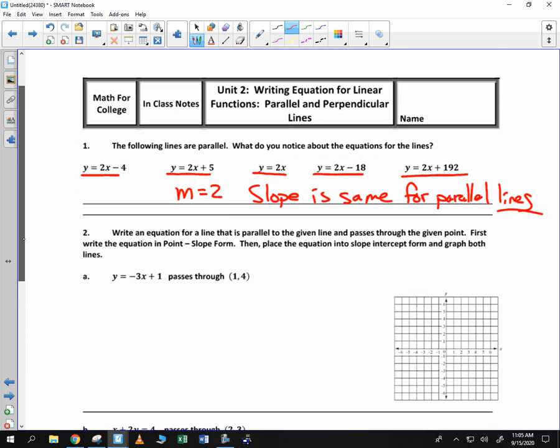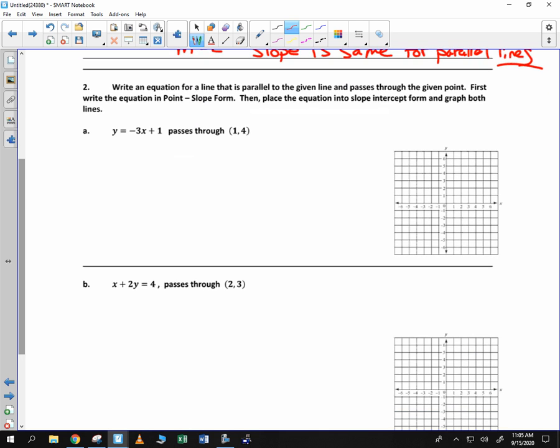So given that information, it says write an equation for a line that's parallel to the given line and passes through the given point. First, write the equation in point-slope form, y minus y1 is equal to m times x minus x1. And place it in the slope-intercept form and graph it.